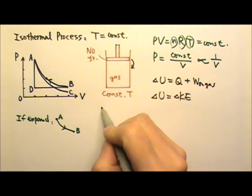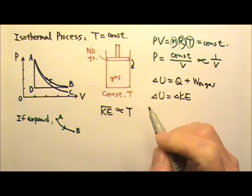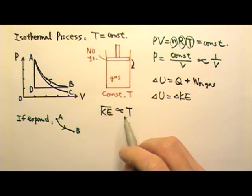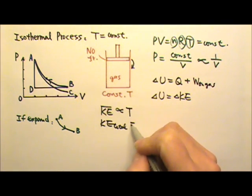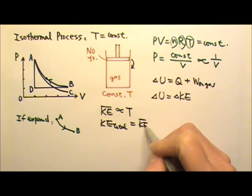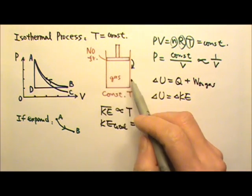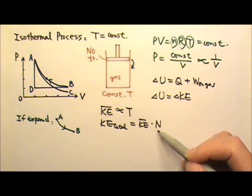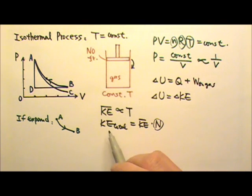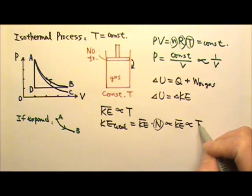From the kinetic theory, we know that the average kinetic energy per molecule is proportional to the temperature. The total kinetic energy is the average kinetic energy times the number of molecules. Because we're looking at a closed system, the number of molecules is constant, so the total kinetic energy is proportional to the temperature.